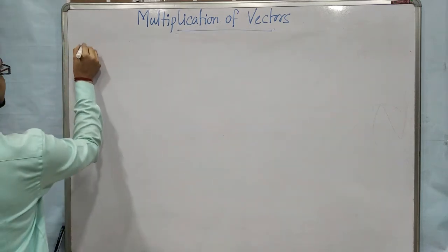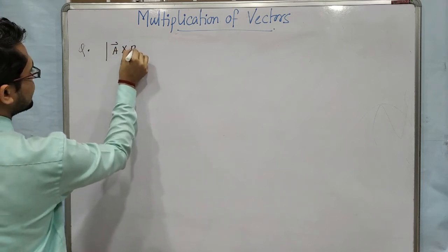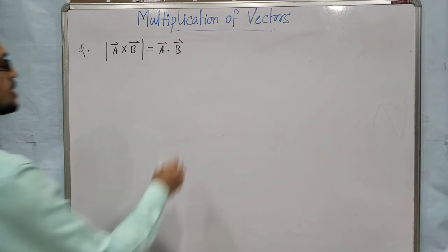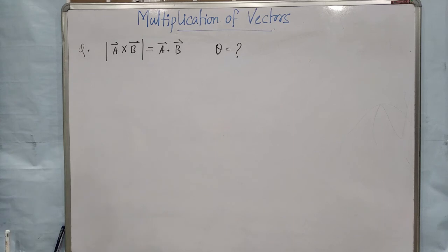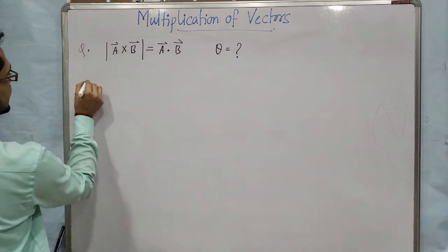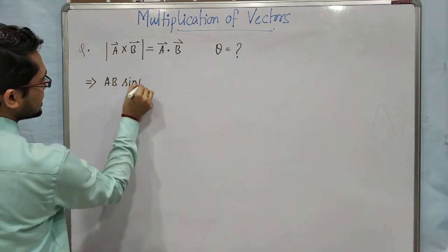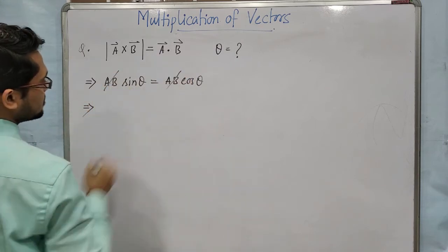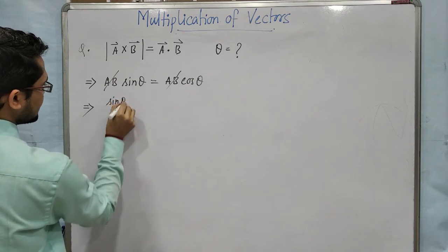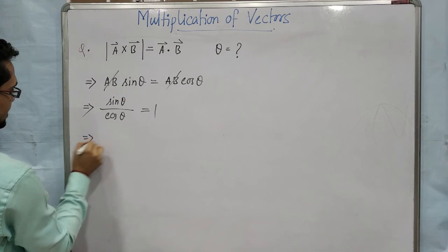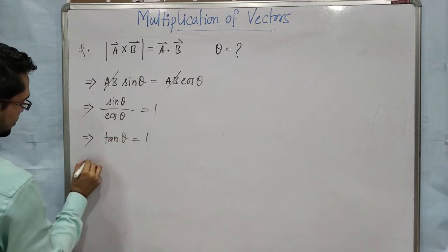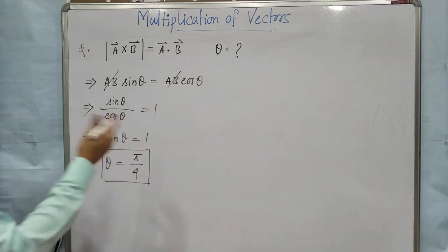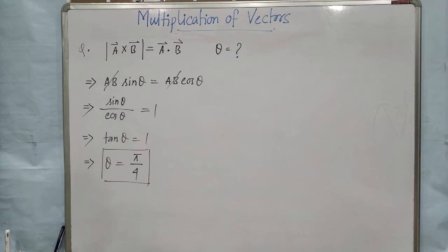Take a short example: suppose magnitude of A cross B equals A dot B. What is the angle between A and B? Magnitude of A cross B = AB sin θ, and A dot B = AB cos θ. AB cancels, so sin θ / cos θ = 1, meaning tan θ = 1. So θ = 45° = π/4.